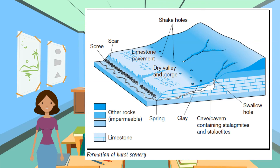Escarpments with a steep scarp slope and a gentle dip slope are characteristic of chalk scenery. There is a lack of surface water, with a complex system of dry valleys. Clay is found over extensive areas of lowlands and produces soils that are sticky and heavy when wet. Clay is impermeable, so there are many surface rivers.